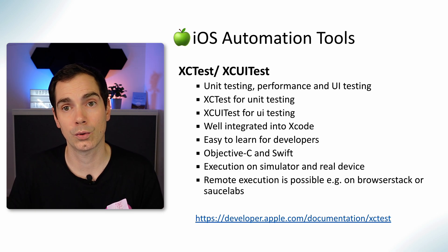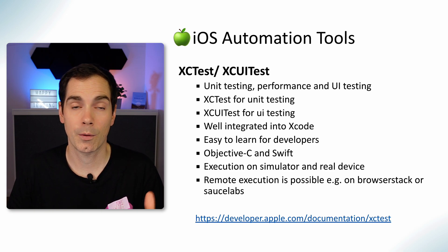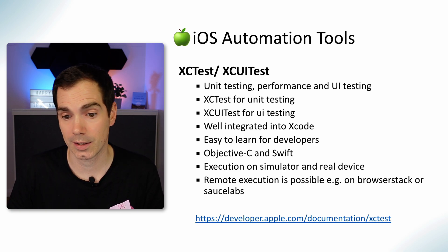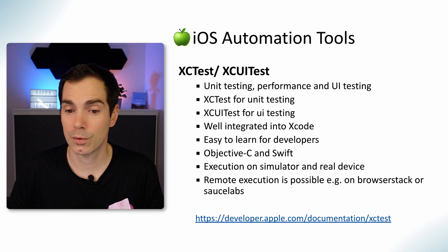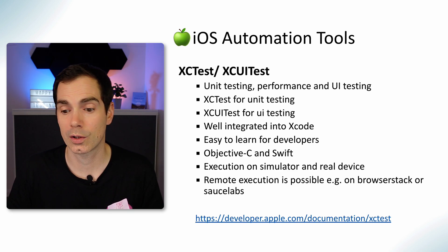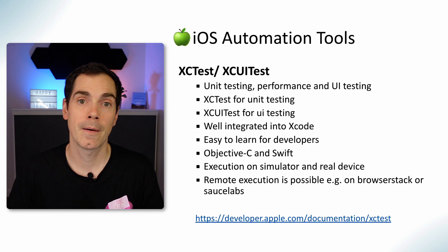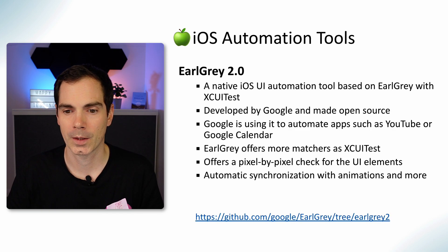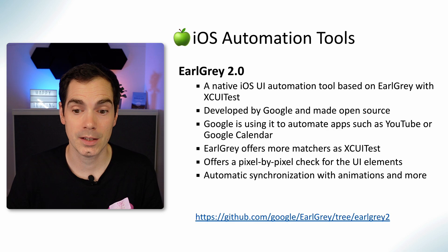Now let's get into iOS test automation tools. The tools I'm presenting that are repeated from the previous video are still valid. For iOS, it's still XCTest and XCUITest — you can use these for unit testing, UI testing, and performance testing, straight out of the box from Apple with Xcode. XCTest handles unit testing, XCUITest handles UI testing. It's really well integrated into the whole Apple ecosystem; you can write in Objective-C or Swift and execute on real devices and simulators.